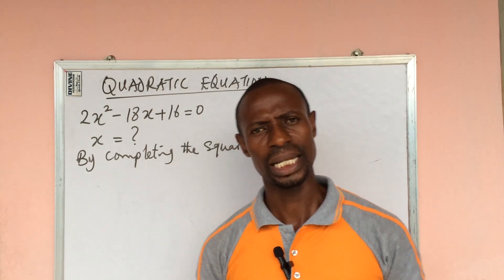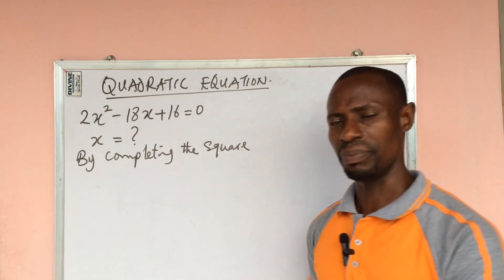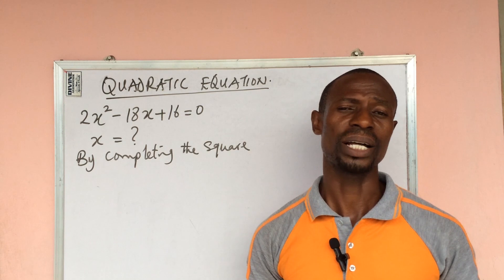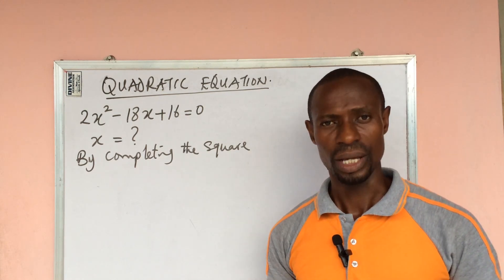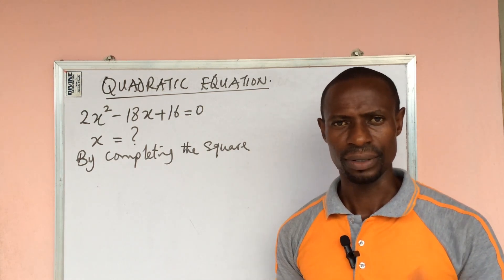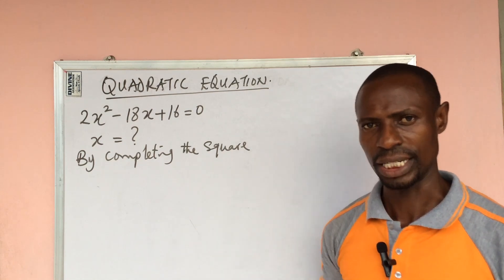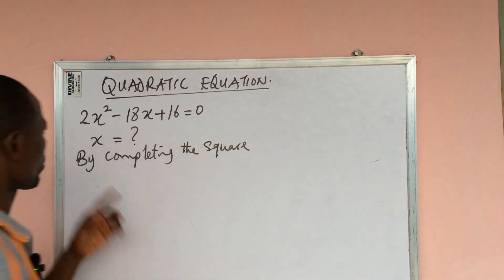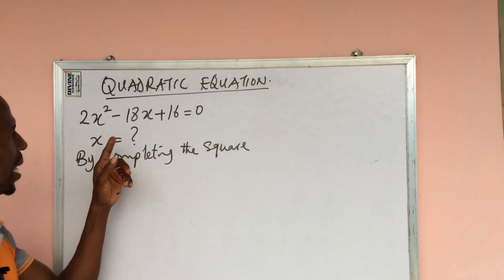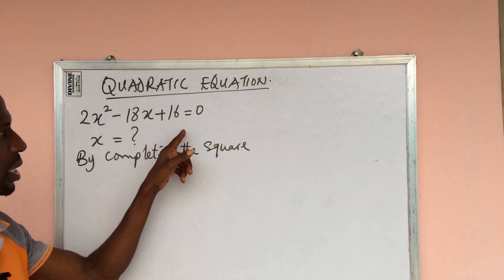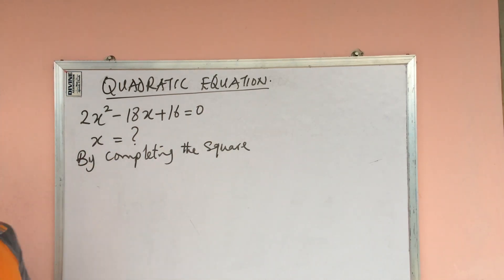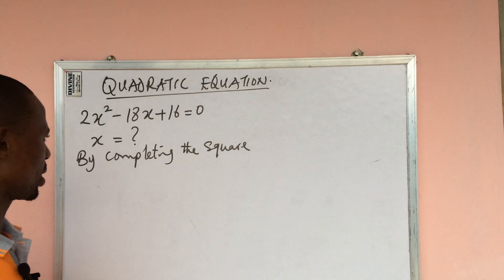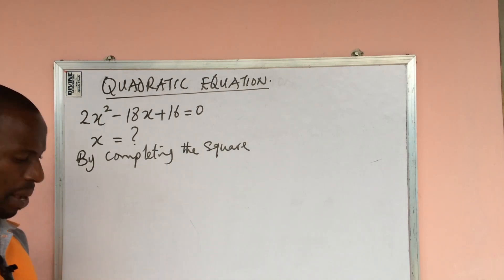So if you're new to this channel, kindly subscribe and turn on the bell notification button so that YouTube can notify you whenever we drop a wonderful video. Let's dive into this challenge. The question says 2x² - 18x + 16 = 0. What would be the possible value of x by completing the square method?